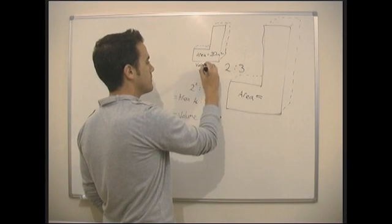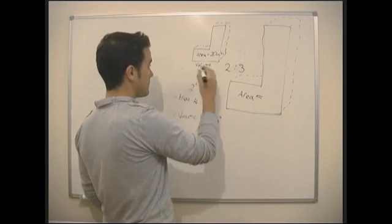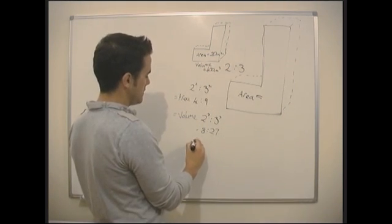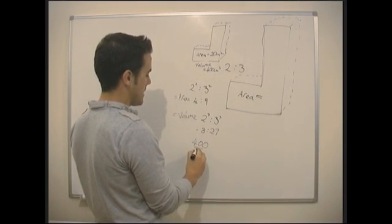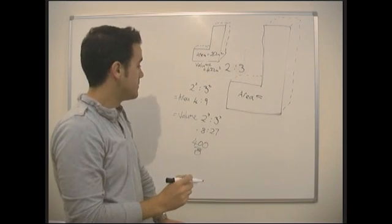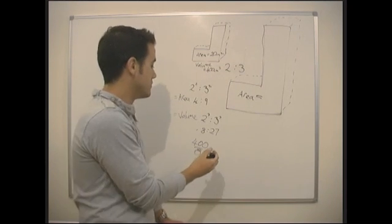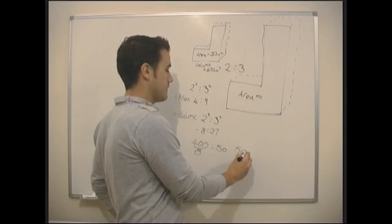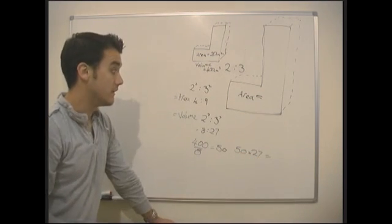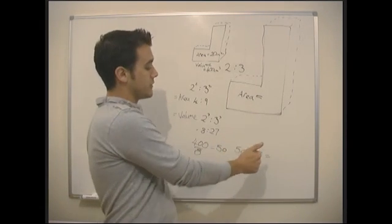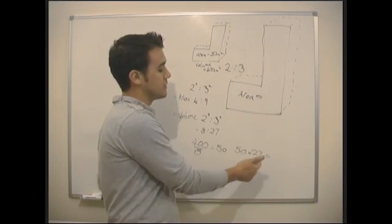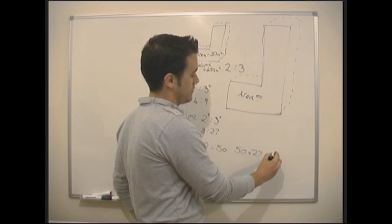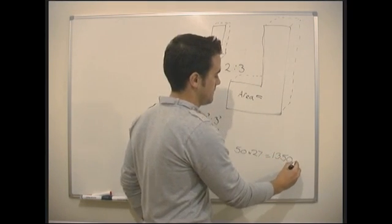And I'm told the volume of this one is 400 centimeters cubed. What would the volume of this be? So I need to do 400 divided by 8. What's 400 divided by 8? Well, 40 divided by 8 is 5, so 400 divided by 8 is just going to be 50. And now I need to do 50 times by 27. And that's going to give me, well, half of 27 is, well, 100 times 27 is going to be 2,700, and half of that is going to be 1,350 centimeters cubed.